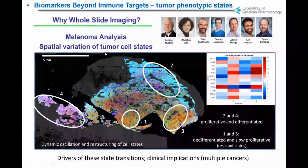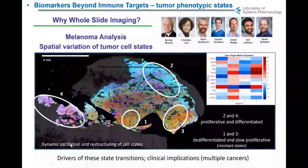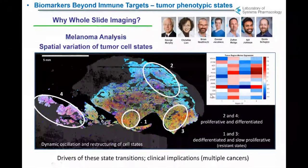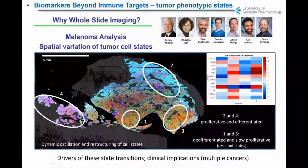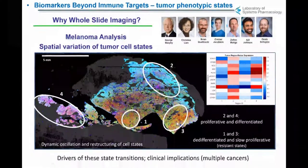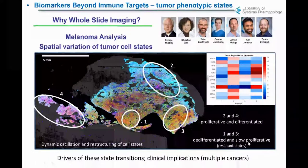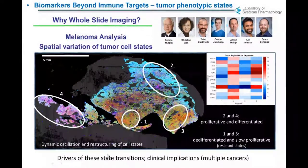What about beyond immune markers? In that exophytic melanoma, looking at the tumor compartment with different markers, we find different tumor phenotypes. In some regions, tumor cells are proliferative — expressing KI-67 and PCNA — and differentiated, expressing melanoma markers like MITF. However, in other regions, these markers are absent; these areas are more de-differentiated and slow proliferators, postulated as resistant states to therapy. There are dynamic oscillations and transitions of cell states occurring in tumors even across a few centimeters of tissue, and we want to understand the drivers of these state transitions and their clinical implications.